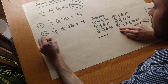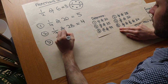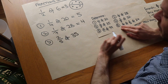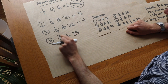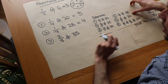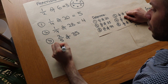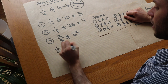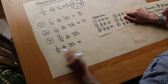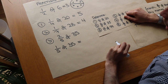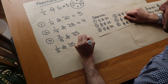Now this next one is a bit different: if I want two fifths of 35, I don't want one fifth of 35, I want two fifths. So what we work out first is: what is one fifth of 35? Well, one fifth of 35 is 35 divided by five — we're splitting the 35 into five — and that would be seven.